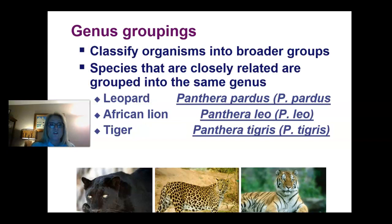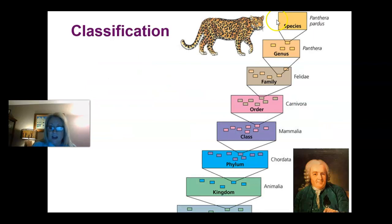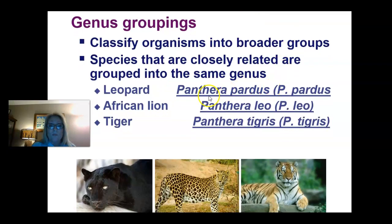For example, a leopard, a lion, and a tiger all belong to the same genus, Panthera. But the species of each one is different. Panthera pardus is a leopard, Panthera leo is an African lion, and Panthera tigris is a tiger.